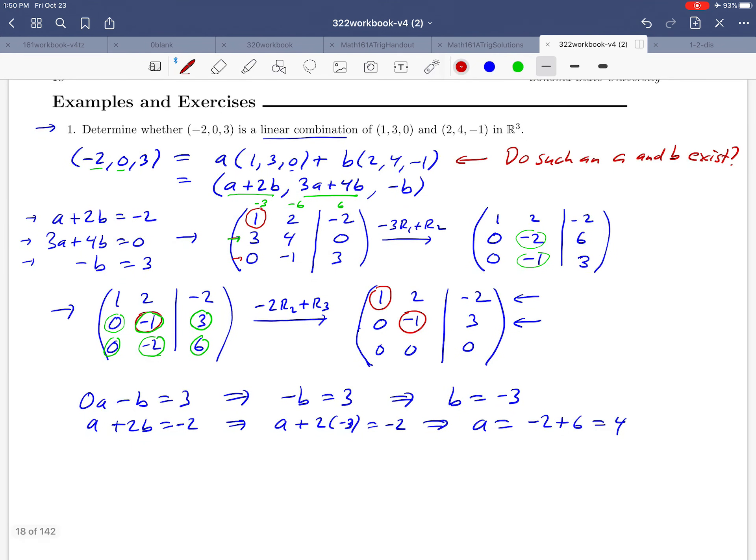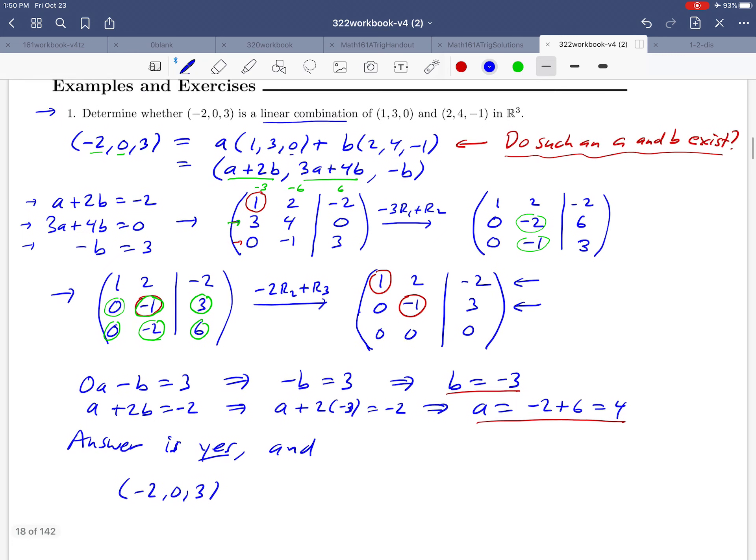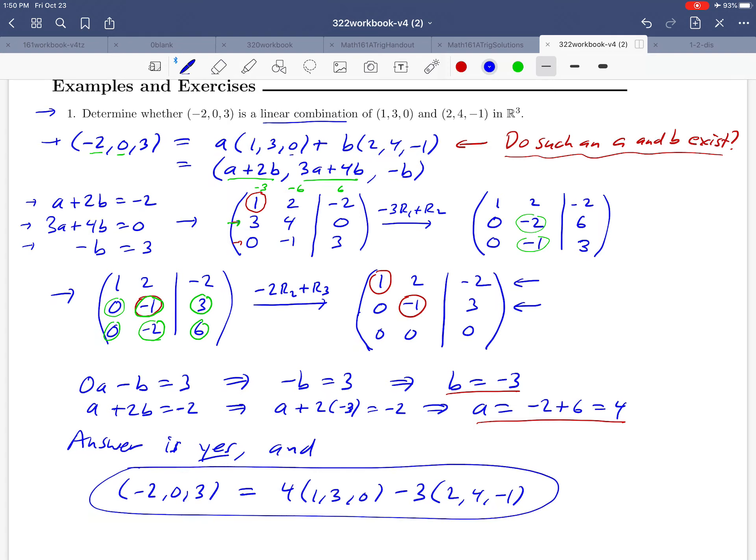So, we were able to find a value for a and a value for b. And that tells us that the answer to this question that we posed up here is yes. We can indeed build (-2, 0, 3) as a linear combination. And so, our answer is yes. And we'll go ahead and just write out the equation that we started with and fill in the values of a and b that we just found. So, a was 4 times that first vector. And b was -3. We have just written the vector (-2, 0, 3) as a linear combination of (1, 3, 0) and (2, 4, -1).